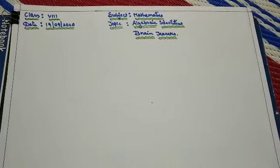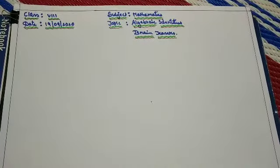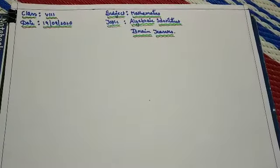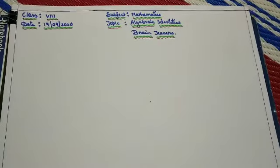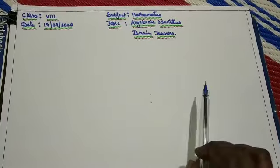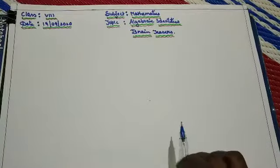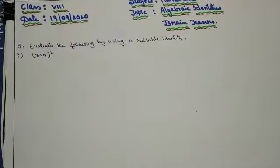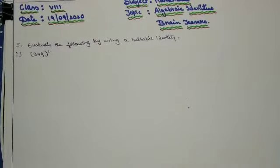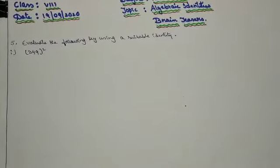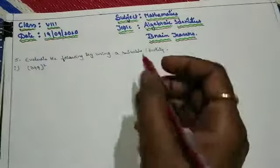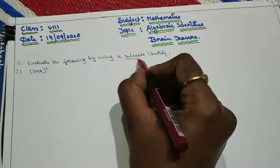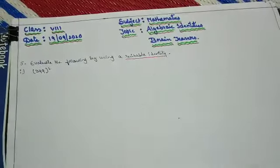Namaste children. Welcome to today's mathematics class. In the previous class we solved brain teasers, second main, third main and fourth main. Today we are going to solve from fifth main. So the fifth main heading is given: evaluate the following by using a suitable identity. Make sure to use a suitable identity.